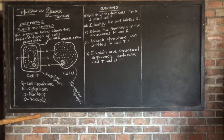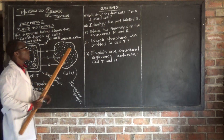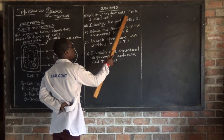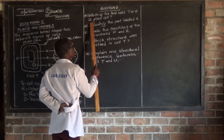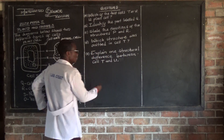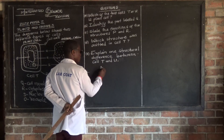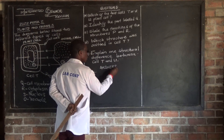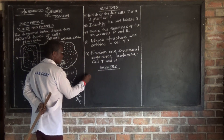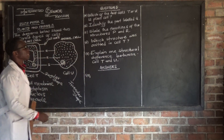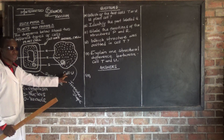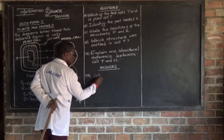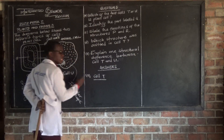Let us look at Question A now. Question A says: which of the two cells, T or U, is a plant cell? The answer is Cell T.